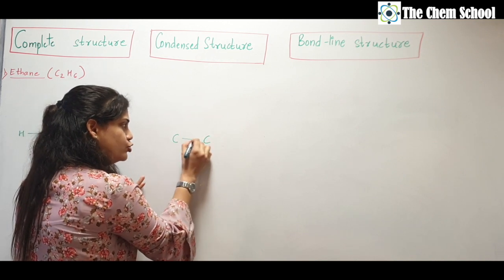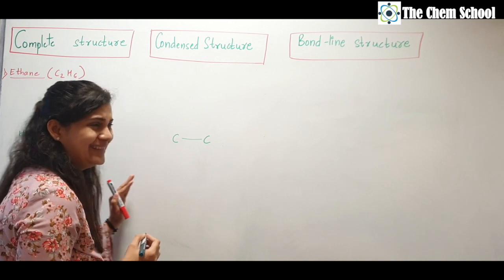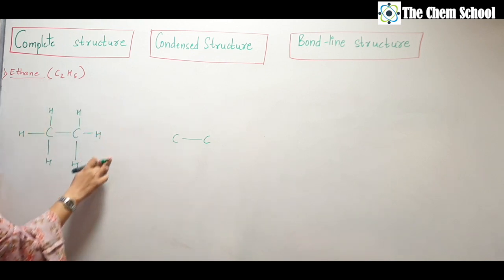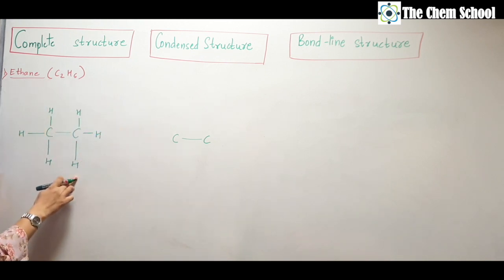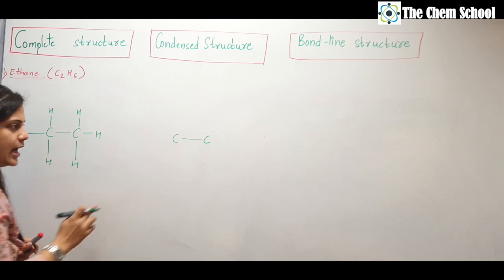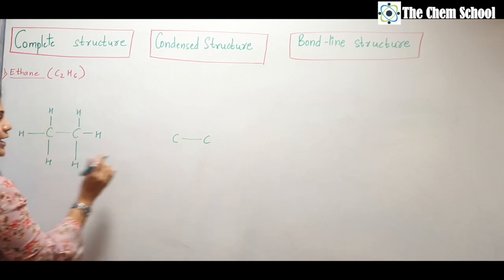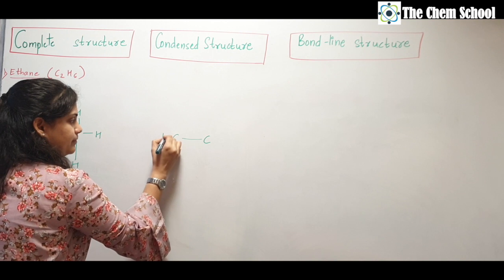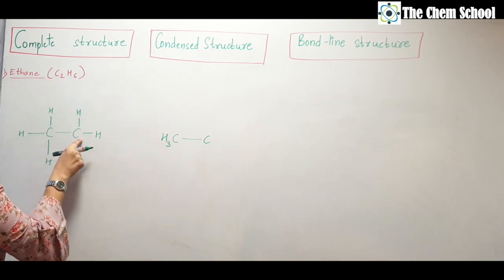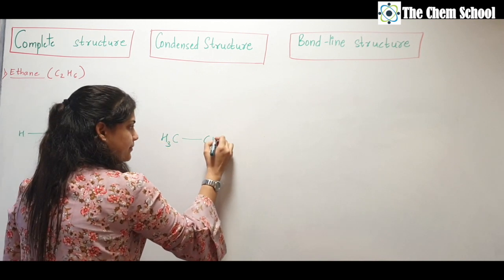From this we will draw the condensed structure. In the condensed structure, draw the two carbons connected to each other, then count the total number of hydrogens and attach them to their respective carbon. So the first carbon will have three hydrogens, and the second carbon will also have three hydrogens.